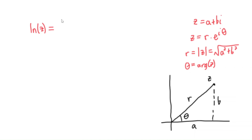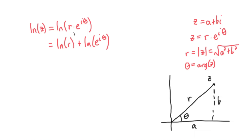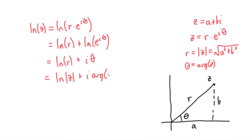So if we want to define natural log of z, we write z as r times e to the i theta. If we want the properties of logarithms to hold, we can rewrite this as natural log of r plus natural log of e to the i theta. Now, natural log of e to the i theta is just i theta. So we get natural log of r plus i theta. Since r is the modulus of z and theta is the argument of z, the definition of natural log of z is: natural log of the modulus of z plus i times the argument of z.